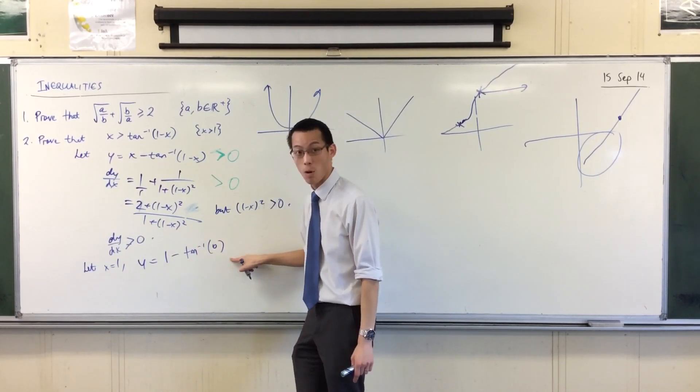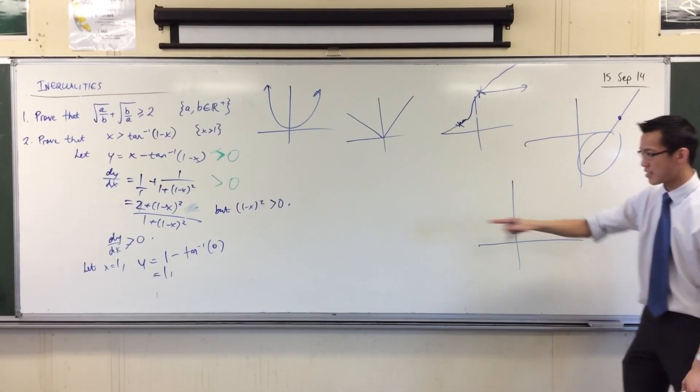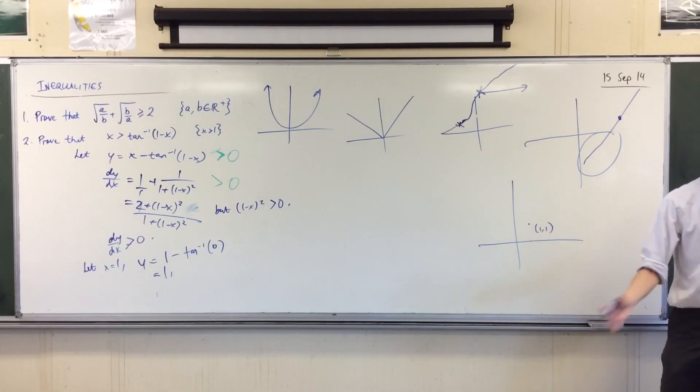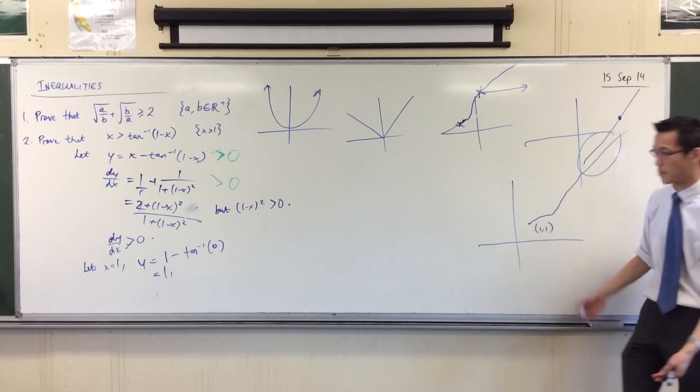When you pop this into here, you get y equals 1 minus tan inverse of 0, which is 0. So, you get 1. So, now I have a picture. At x equals 1, y equals 1. And the derivative tells me it's increasing from then on. So, it's always above the axis.